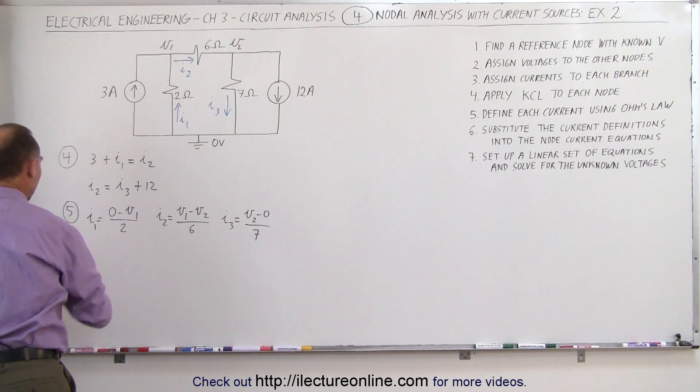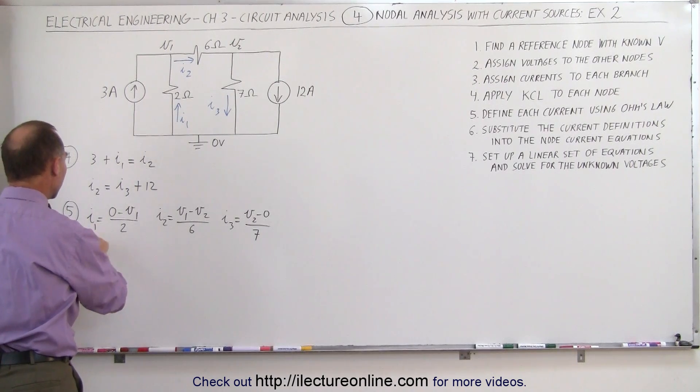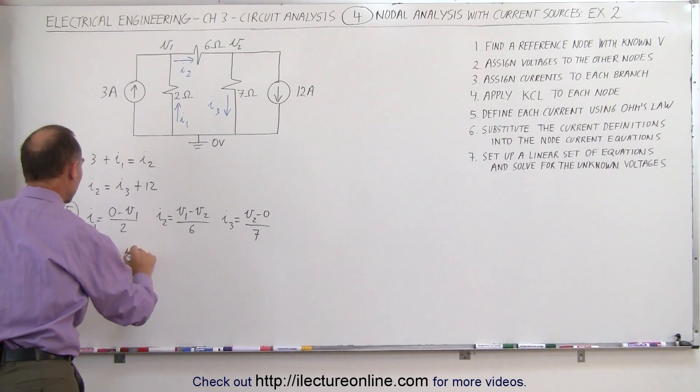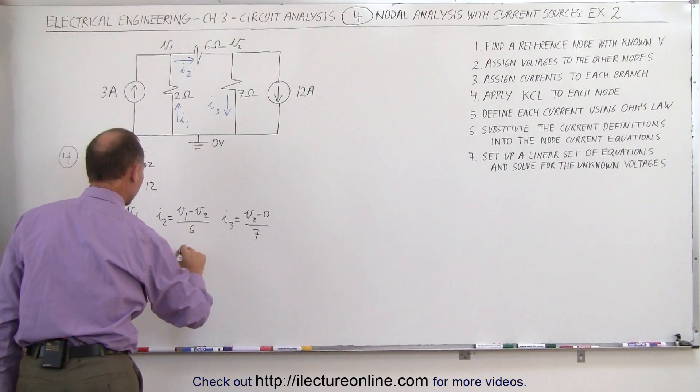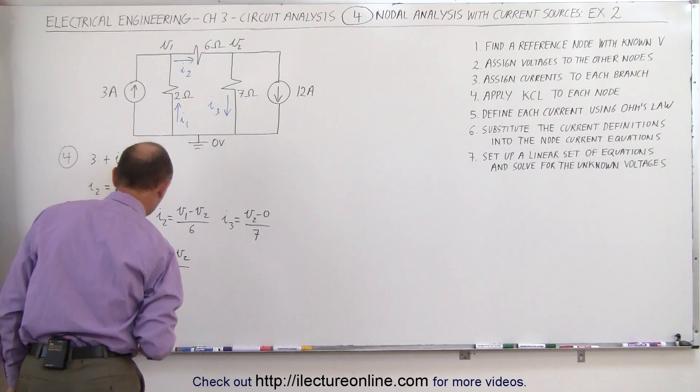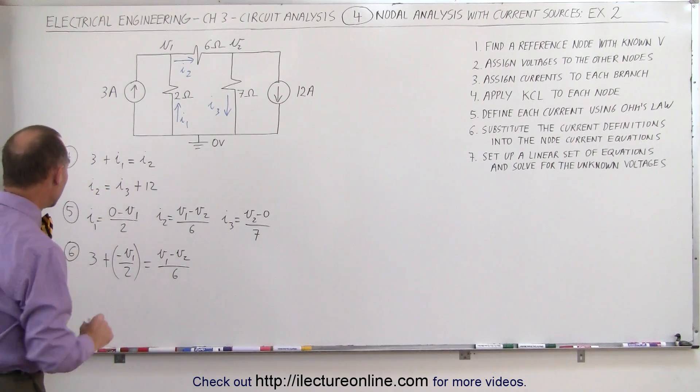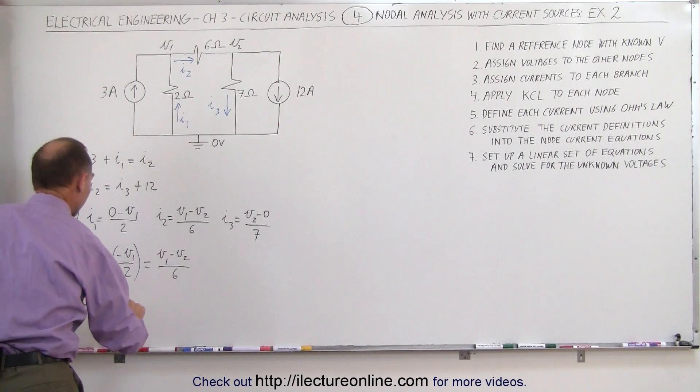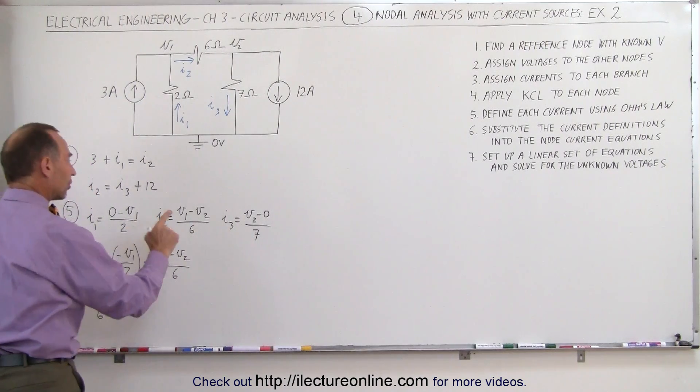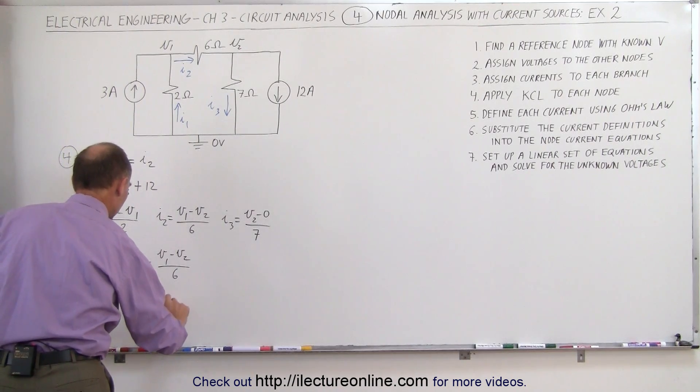We're now going to take those three definitions and plug them back into our two equations, which is step number 6. So we get for the first equation 3 plus I1, which is minus V1 divided by 2, and we set that equal to I2, which is equal to V1 minus V2 divided by 6. Our second equation, when we plug in the correct values for I2 and I3, we get V1 minus V2 divided by 6, and set that equal to I3, which is V2 divided by 7 plus 12.